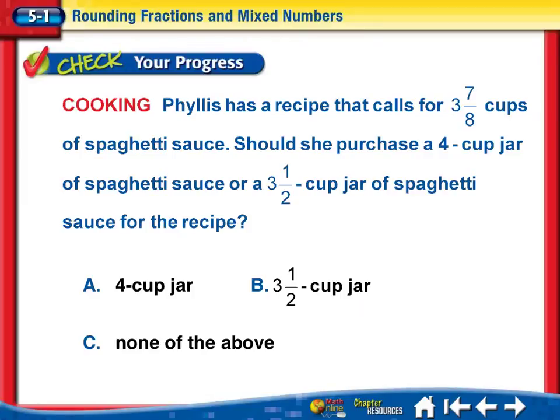Here is an example of how to use this in real life. Phyllis has a recipe that calls for 3 and 7 eighths cups of spaghetti sauce. Should she purchase a 4 cup jar of spaghetti sauce or a 3 and a half cup jar of spaghetti sauce for the recipe?